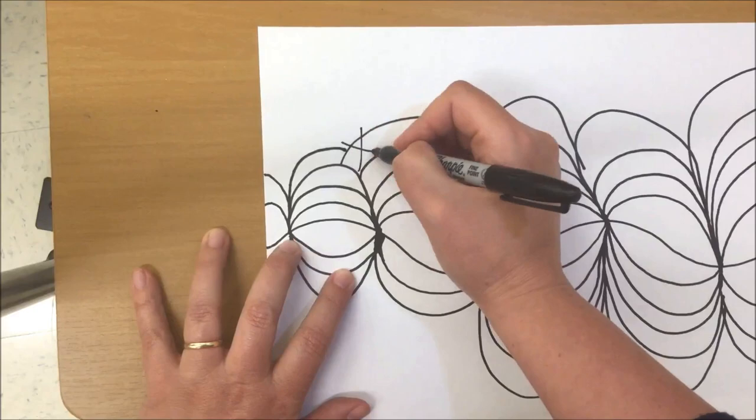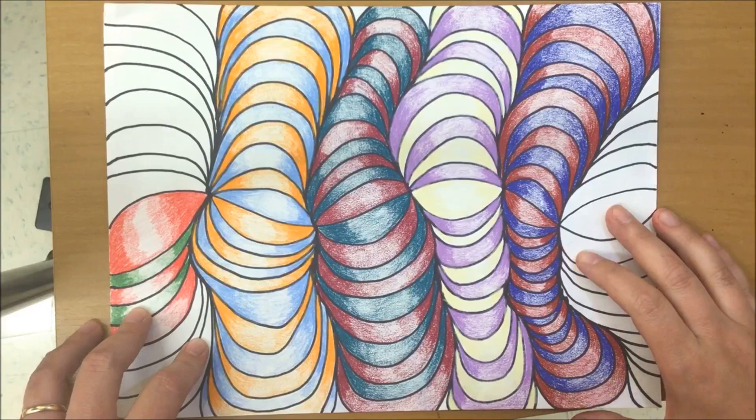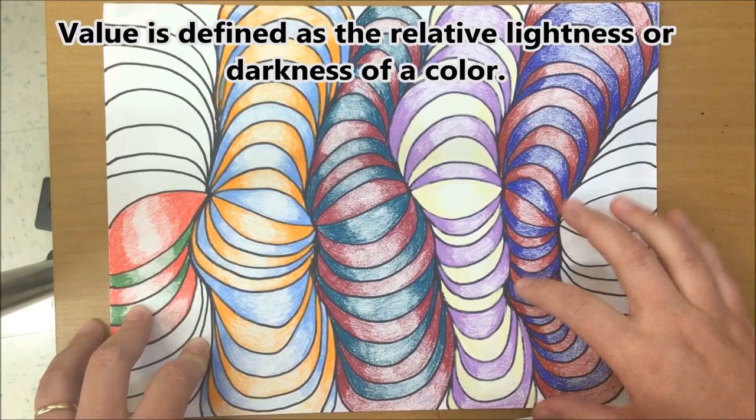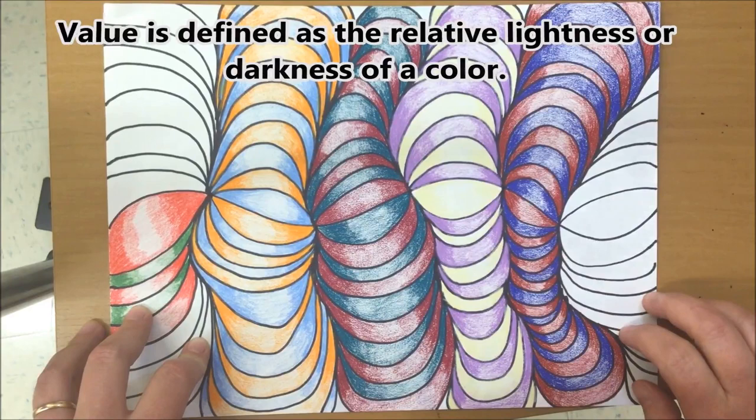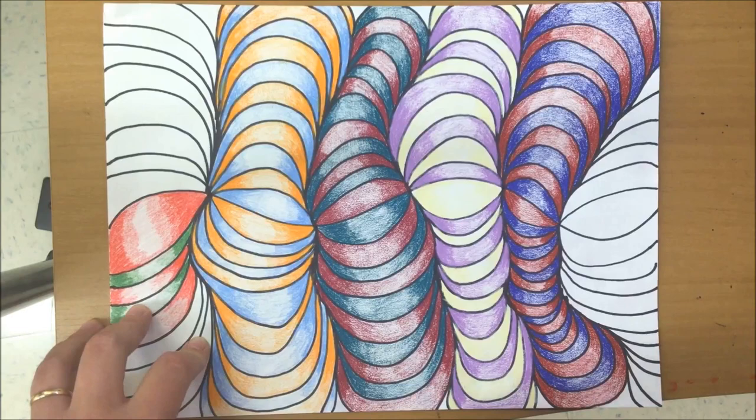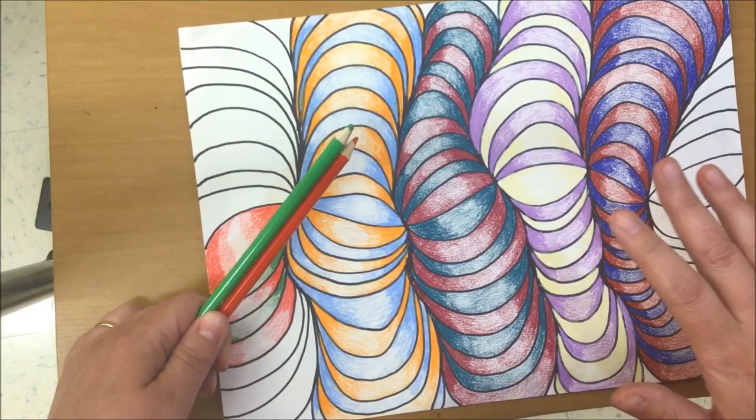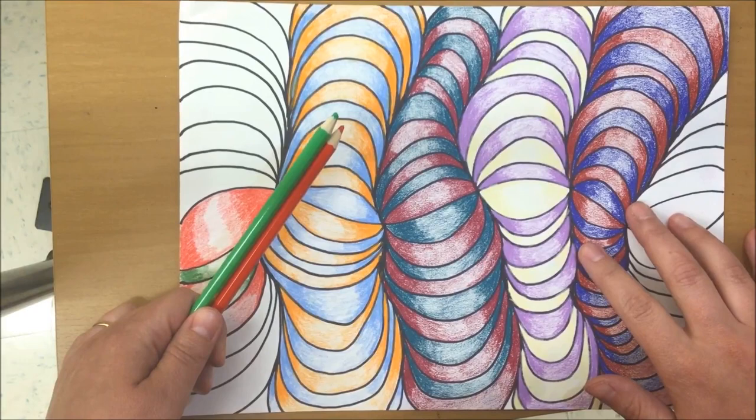Now we're ready to add color and value to our tunnels. The colors are going to add interest, but the value is going to give you that three-dimensional look where your tunnels look like they're moving through space. To accomplish that, I suggest to most students that they start with two colors for making their patterns. If you feel comfortable working with three or four in a pattern, go for it. But if you're new to this, I would start with two. It's the easiest way to do this.